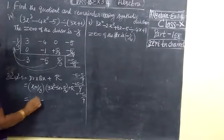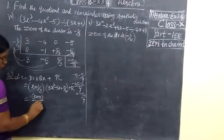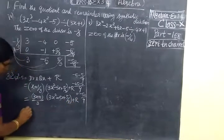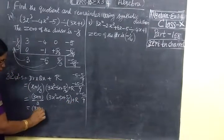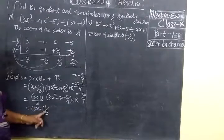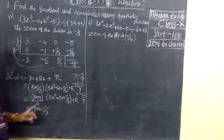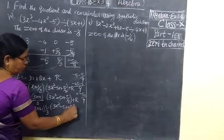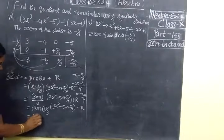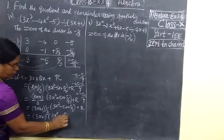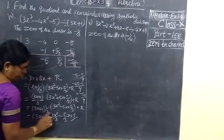Now take the LCM. LCM is 3. So this gives us 3x plus 1 divided by 3. Then the quotient terms are 3x squared minus 5x plus 5 by 3, then the remainder. So 3x plus 1 — the 3 in the denominator will multiply through. Since 1 by 3 is in the denominator, we write it as 1 by 3. Then 3x squared minus 5x plus 5 by 3, that is the remainder half.